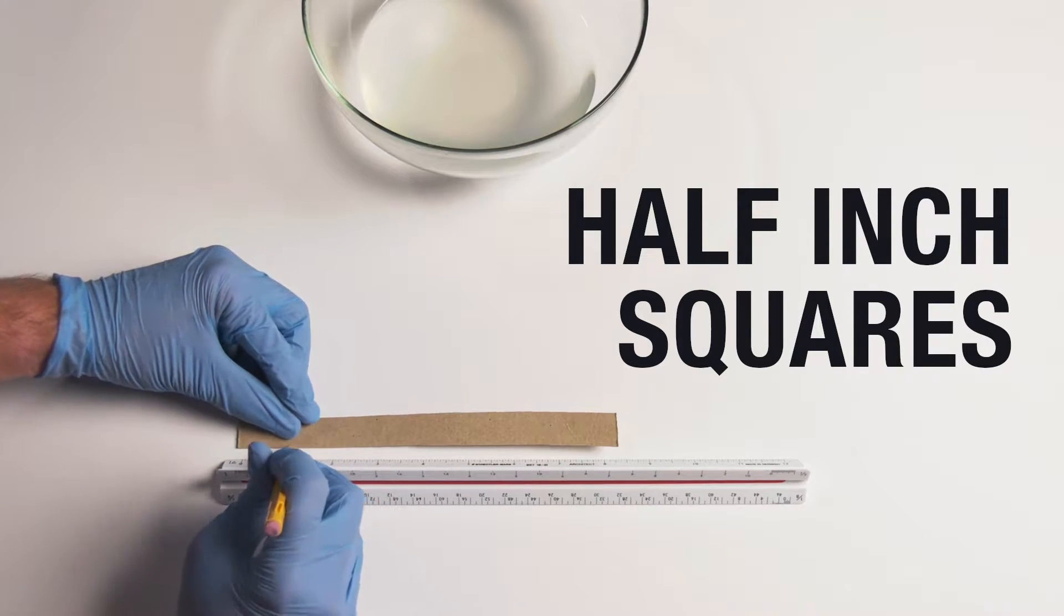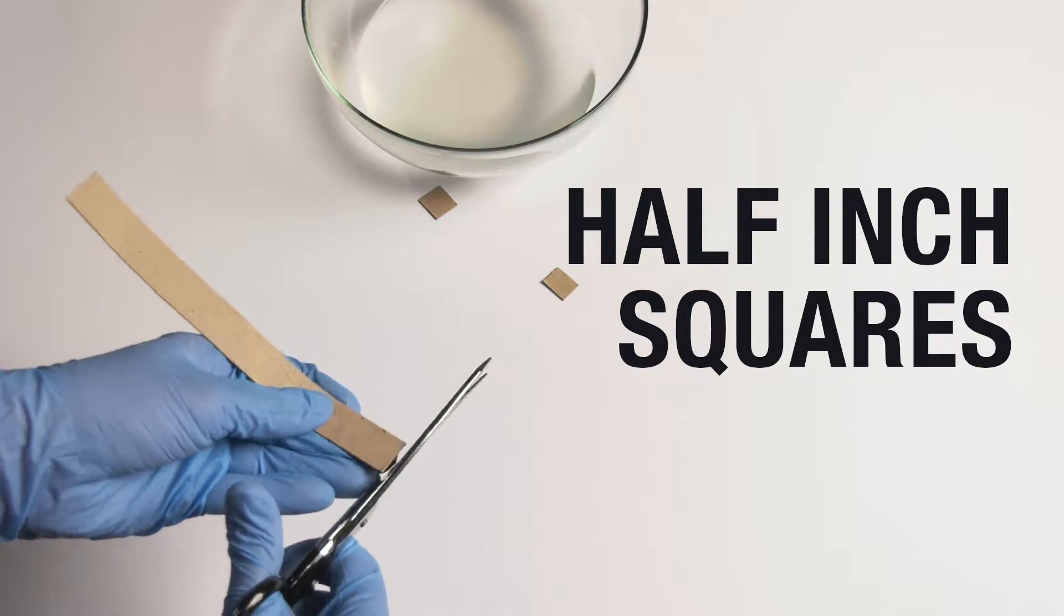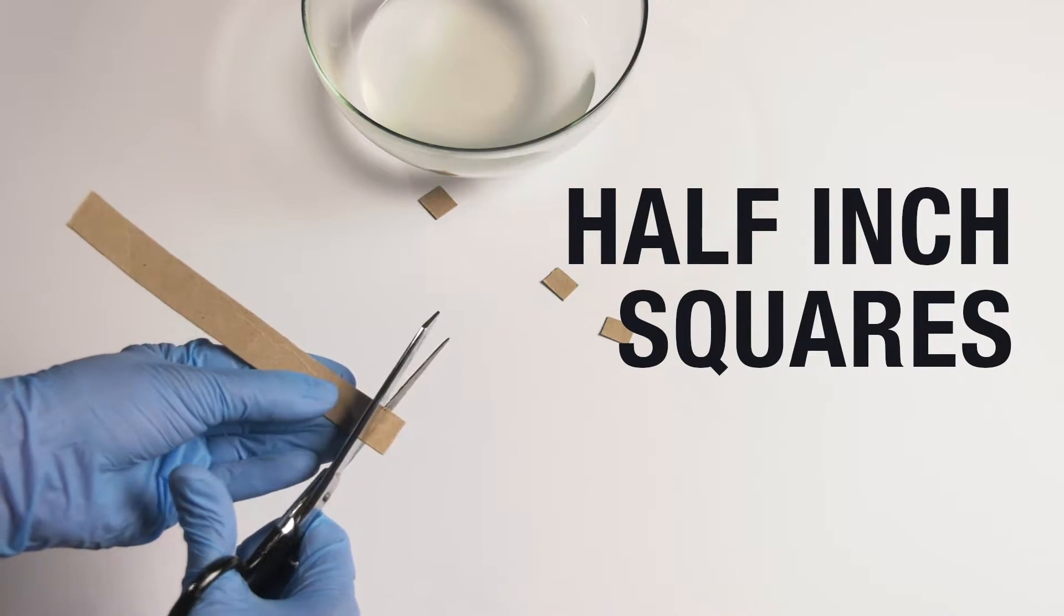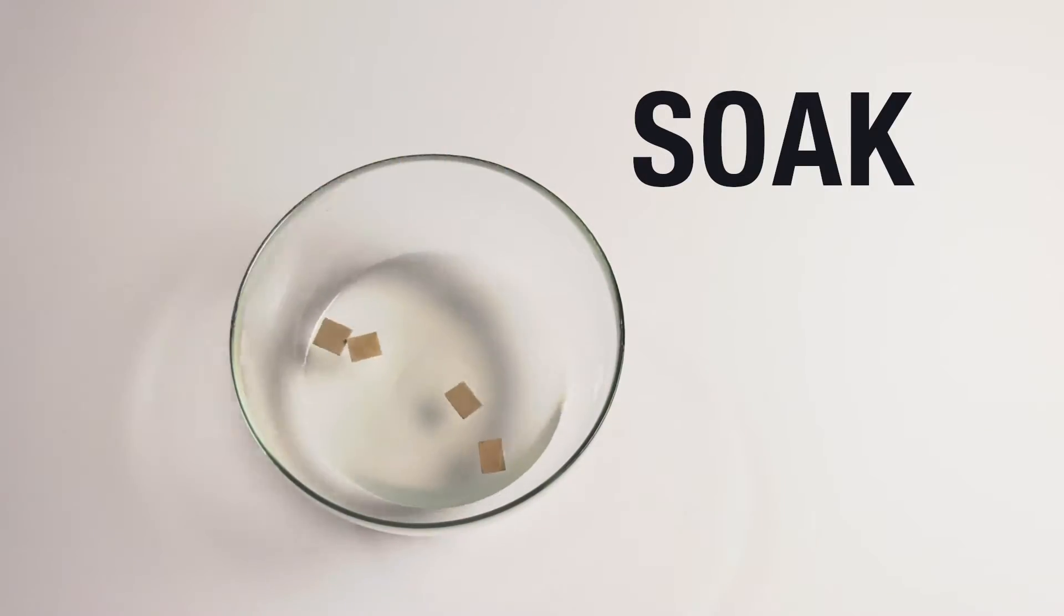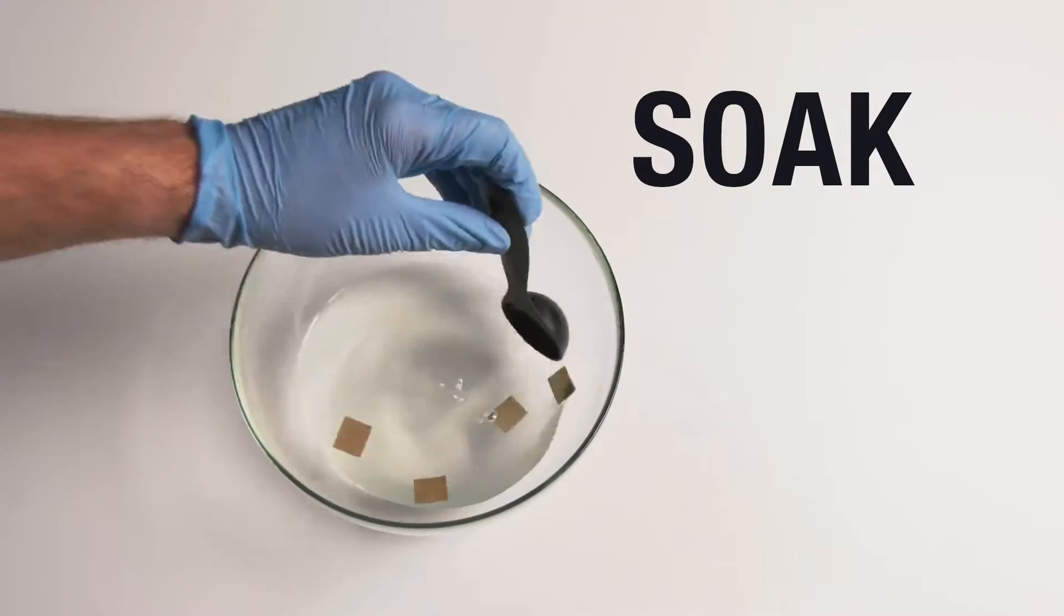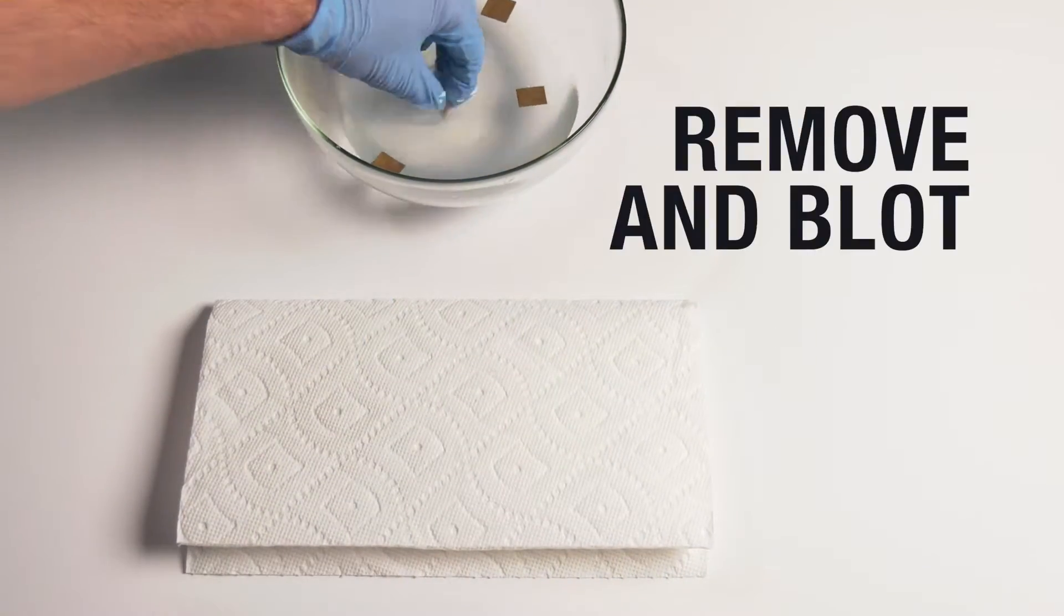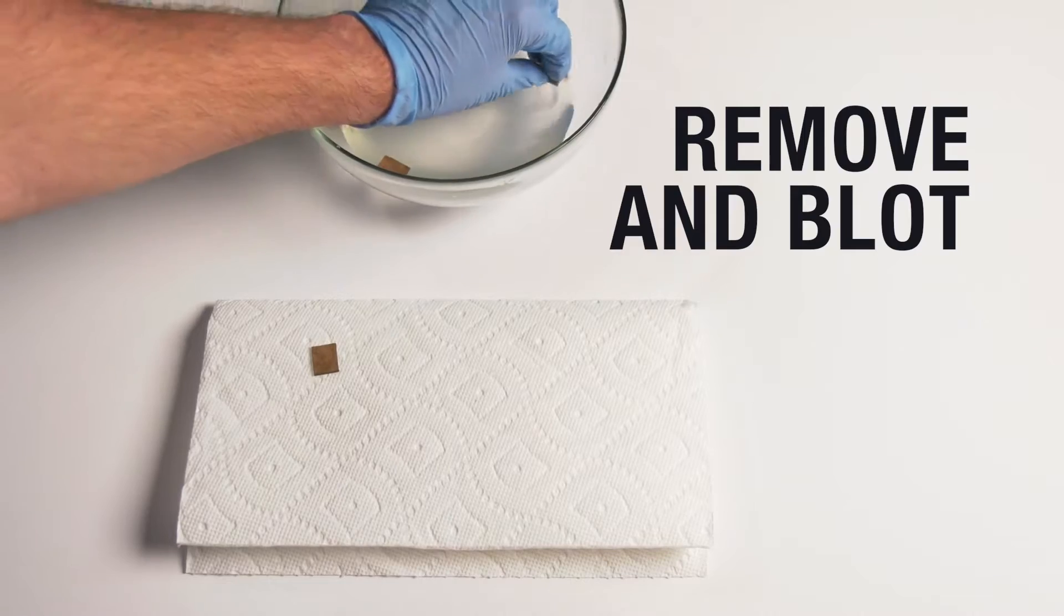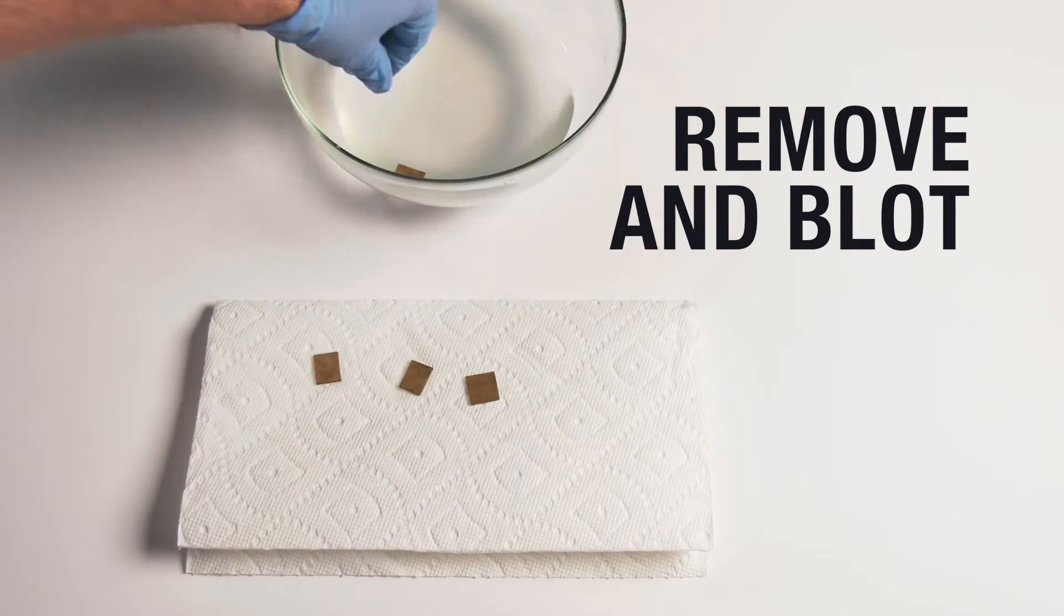Cut the cardboard into four squares, approximately a half an inch on each side. Soak them thoroughly in the salt water solution. Once they're fully soaked, take them out and set them on the paper towel. They will need to be damp but not dripping with liquid.